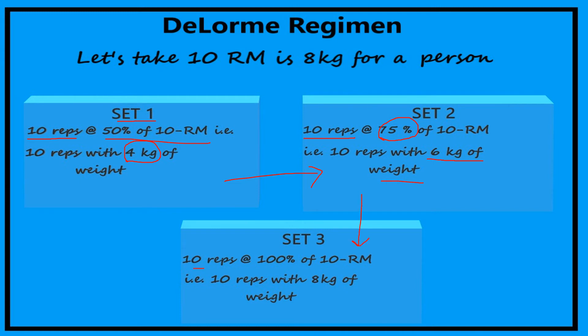When he progresses to set 3, the person needs to perform 10 reps with 100% of the 10RM — that is, 8 kgs of weight. So with every set, the resistance is increasing: set 1 was 50%, set 2 was 75%, and set 3 is 100%.